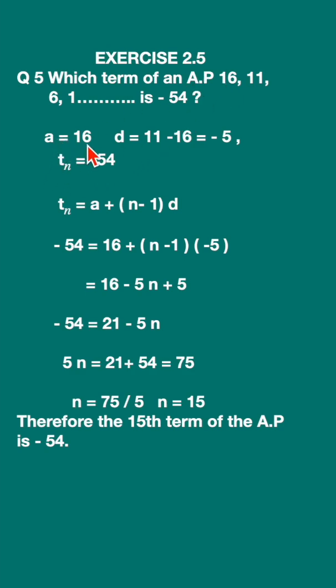The first term a is 16, so a = 16. d is the common difference. Let's find it: second term minus first term, so 11 - 16 = -5. Therefore d = -5.